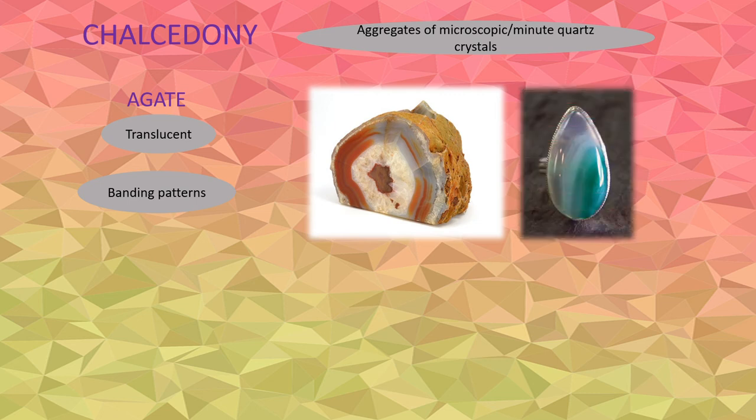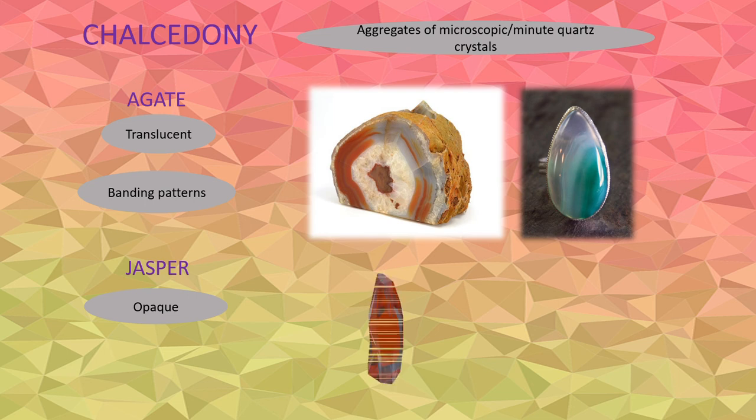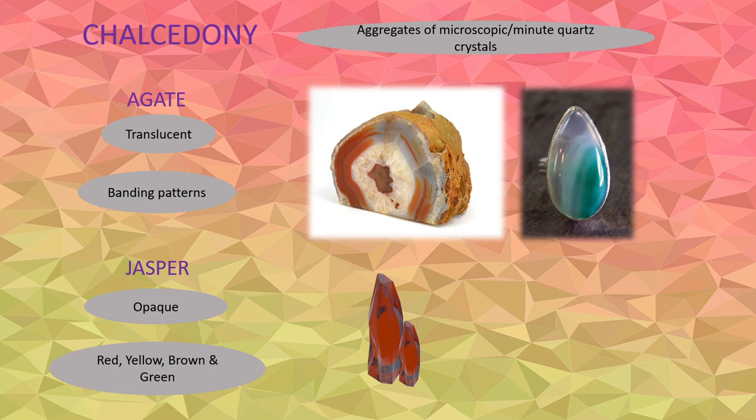Agate are translucent in appearance. On the other hand, jaspers are also micro-granular quartz which are opaque in appearance, whereby light can't pass through it. Jaspers usually exist as red, yellow, brown, and green in color.